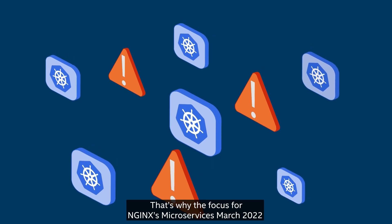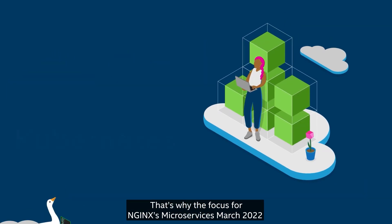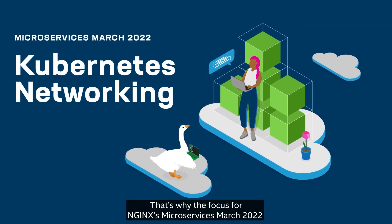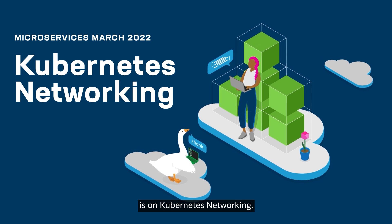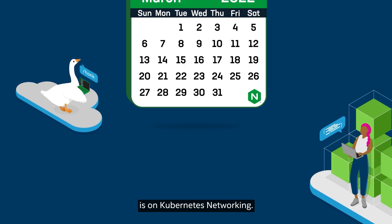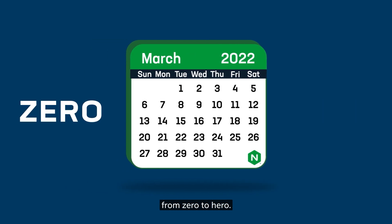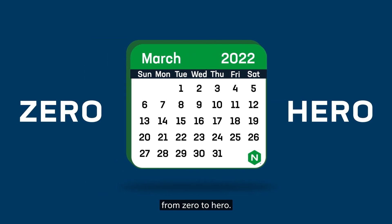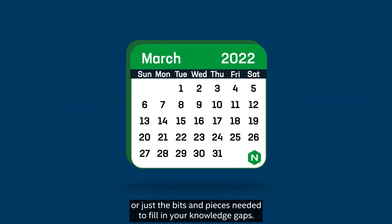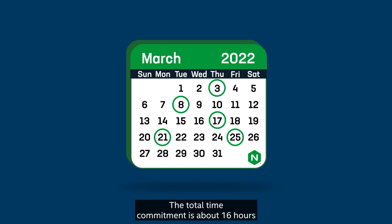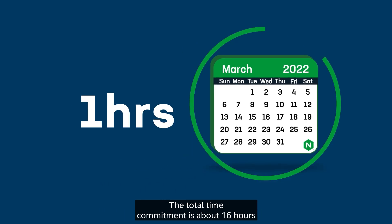That's why the focus for Nginx's Microservices March 2022 is on Kubernetes networking. It's a month-long, free program that will take your Kubernetes networking skills from zero to hero. You can choose to complete the entire program, or just the bits and pieces needed to fill in your knowledge gaps. The total time commitment is about 16 hours, spread across the month of March.